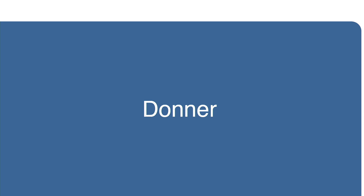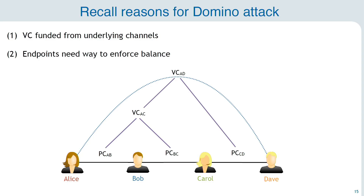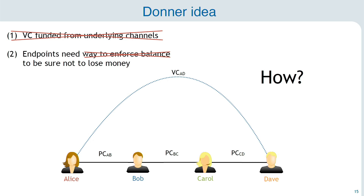This brings us to the new virtual channel construction, which we named Donna. Let's recall the reasons for the domino attack and see how we get rid of it. The two main reasons were: (a) it's funded from the underlying channels, and (b) the endpoints need a way to enforce the balance. What we do is try to get rid of funding the virtual channel from the underlying channels, and also we replace the second point — instead, the endpoints are now guaranteed that they won't lose any money.